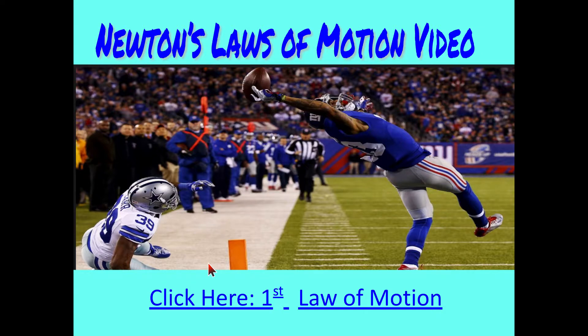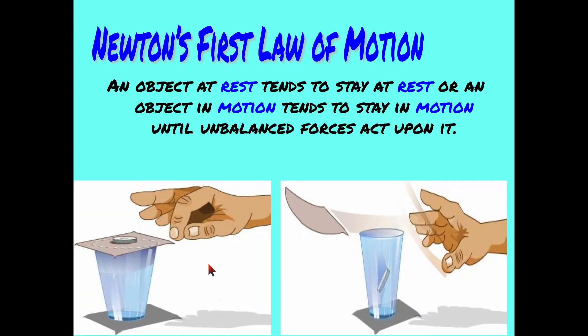Newton's First Law is the Law of Motion: an object at rest tends to stay at rest, or an object in motion tends to stay in motion until an unbalanced force acts upon it. In this case, as you can see in the picture, you have the card, the coin, and the cup. If you flick the card fast enough that friction doesn't affect the coin, the card will move and the coin will fall into the cup.